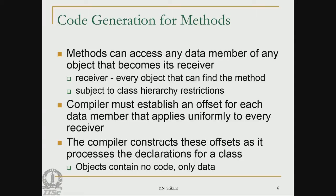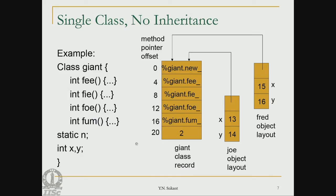Let us consider the case of no inheritance — a single class with no inheritance. In this simple example, the class has methods phi, phi, pho, and pho, and all methods are defined within this class since there is no inheritance. There is a static variable called n and two integer instance variables x and y. The class record — called the giant class record — will have a field for the static variable and pointers to the code for each method.